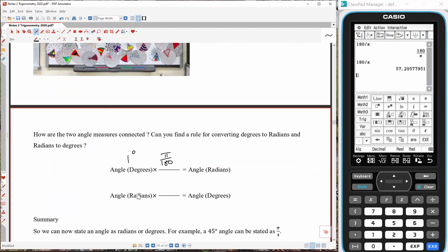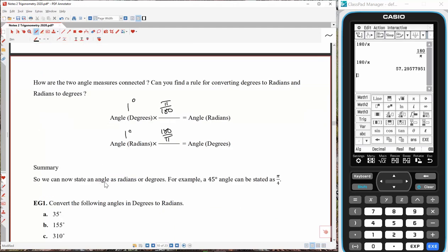And the opposite is true. If I'm going from 1 radian, and I want to convert to degrees, I multiply by 180 on π. So, we can now state an angle as radians or degrees.